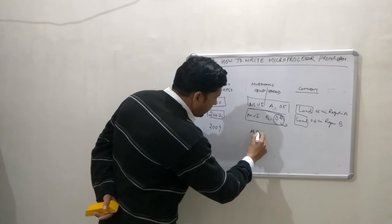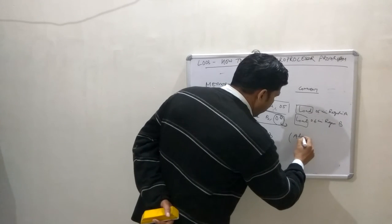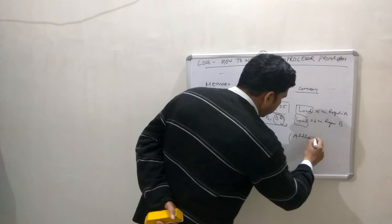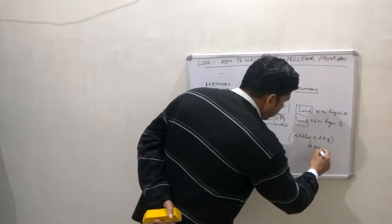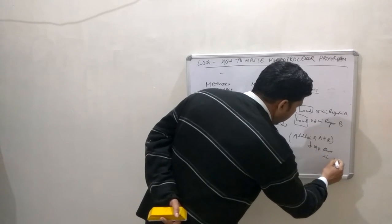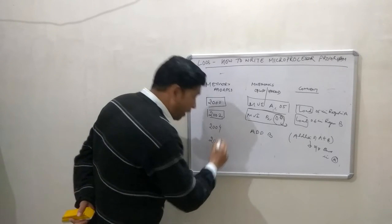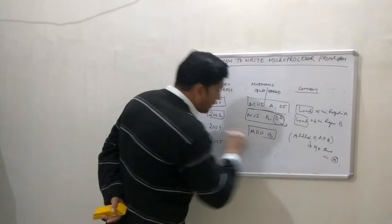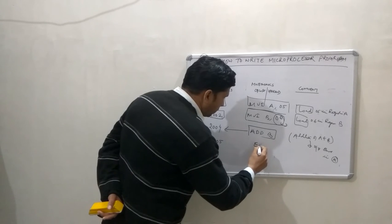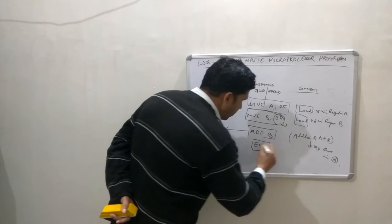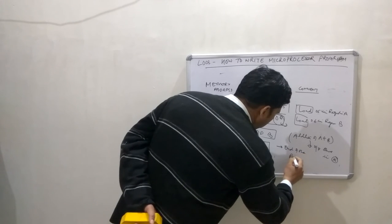At address 2004 I write ADD B. ADD B means addition of A and B, and the output is stored in A by default. The next memory address will be 2005. Why 2005? Because ADD B is a one-byte instruction — it only works with registers — so it takes only one memory address. The last instruction is HLT, which represents the end of the program.